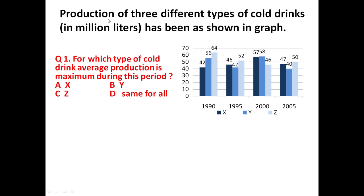The given problem is: production of three different types of cold drinks in million litres is shown in the graph. This is the bar chart. Three cold drinks X, Y and Z are being produced in 1990, 1995, 2000, and 2005.